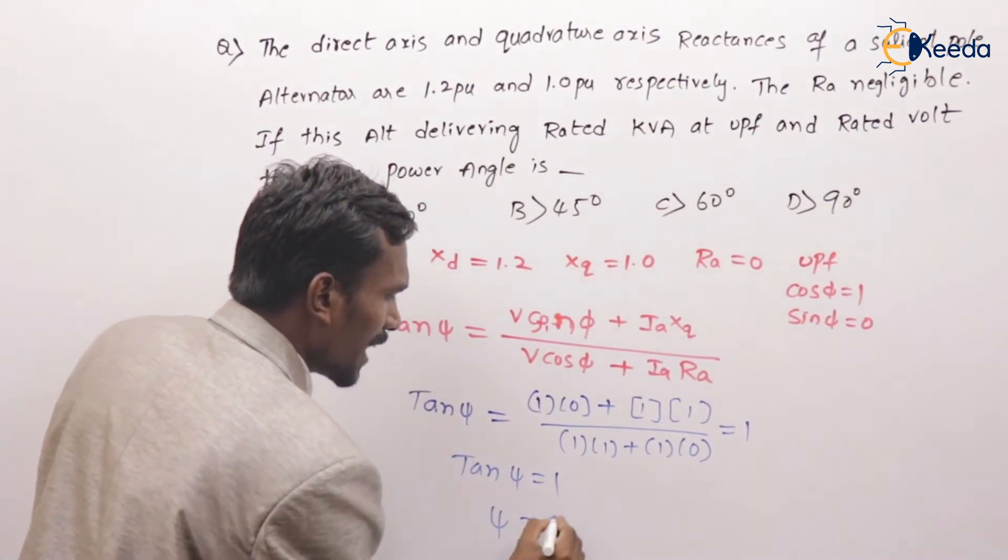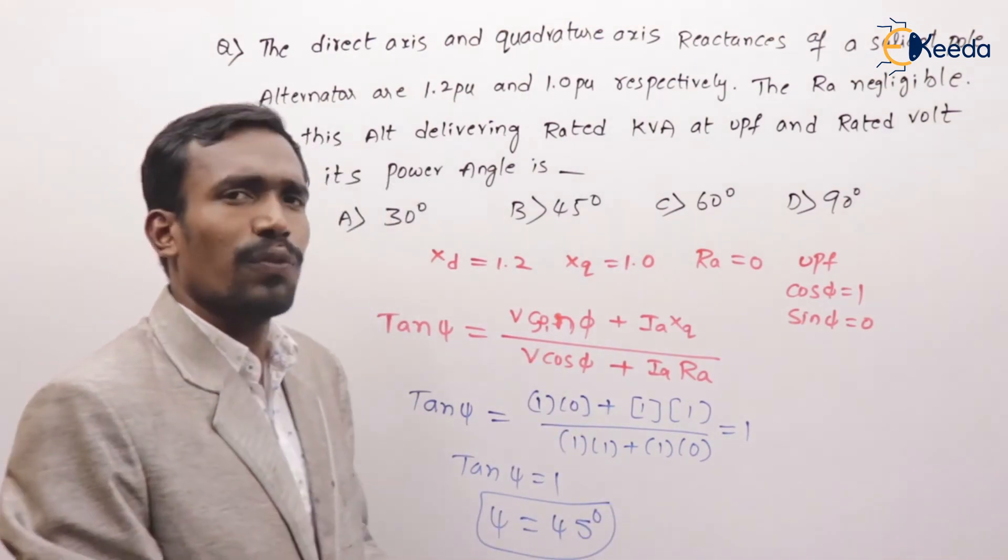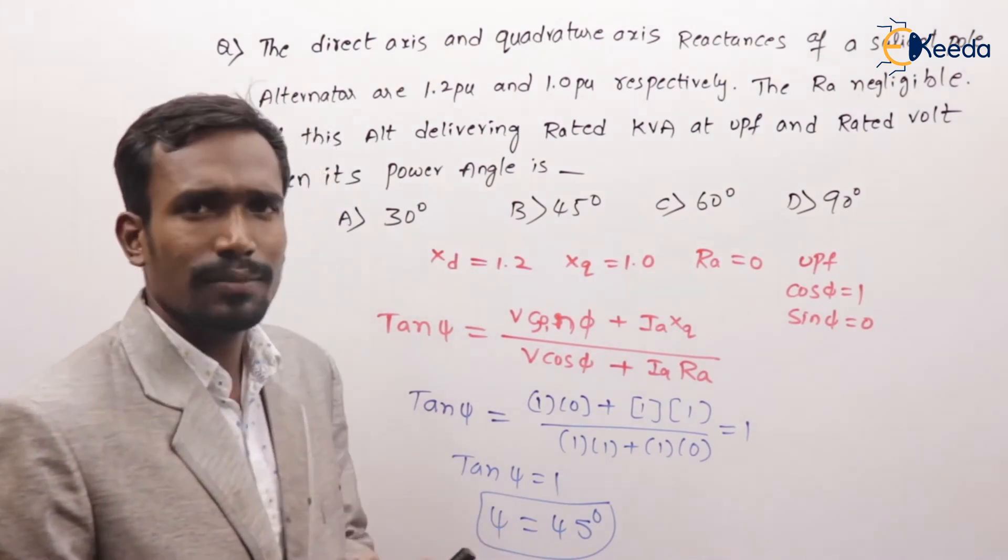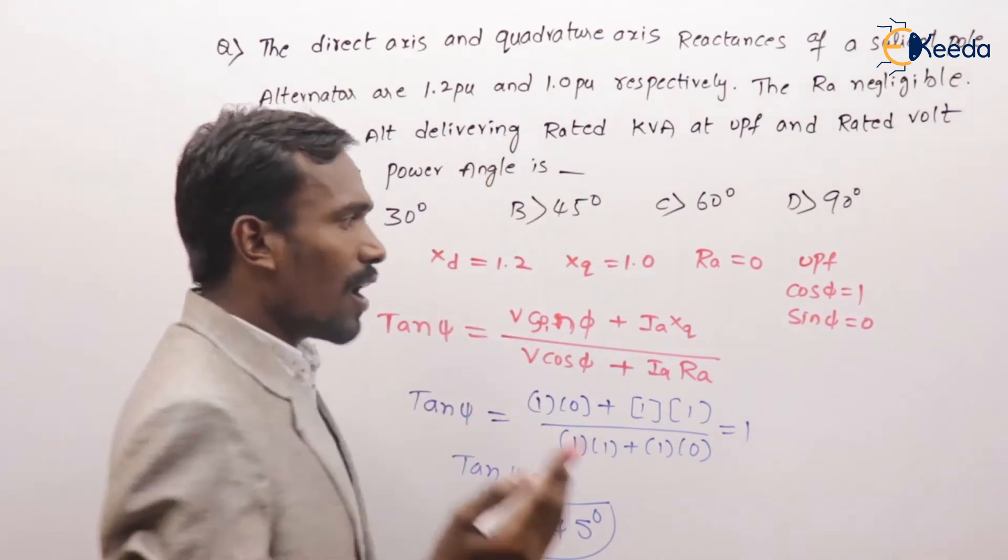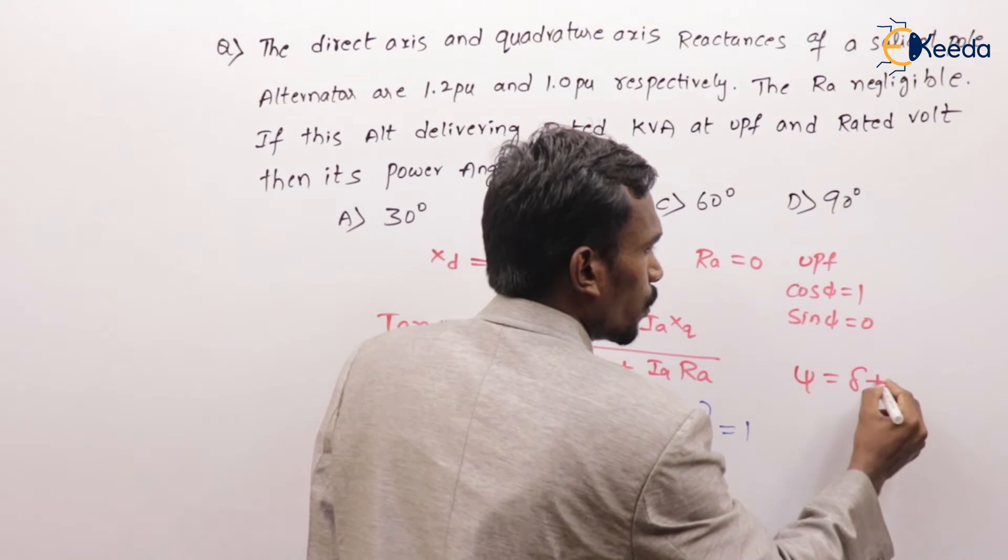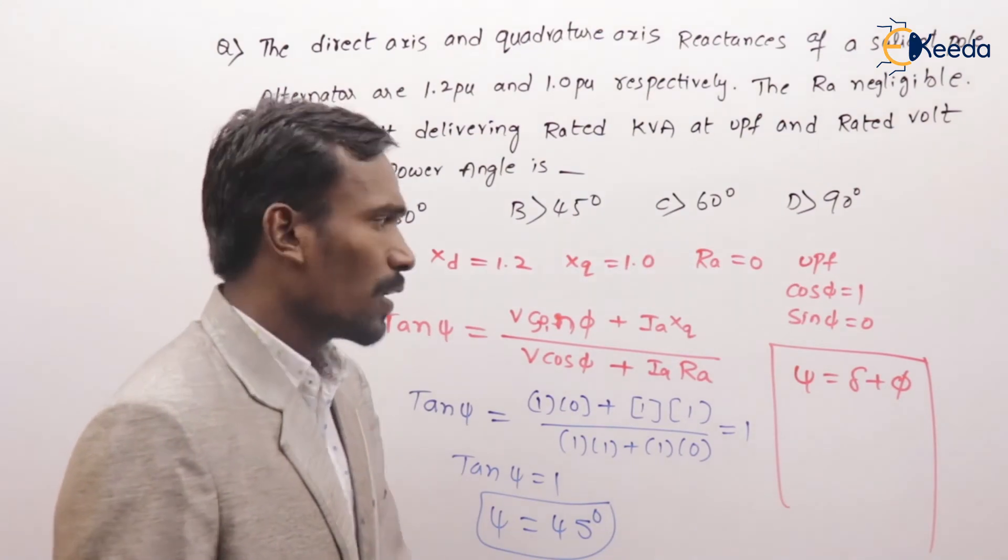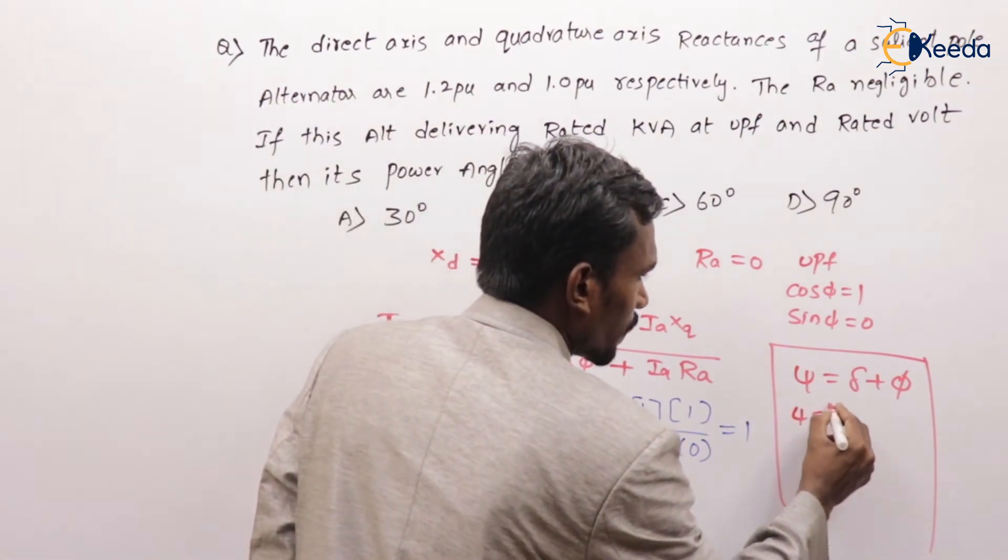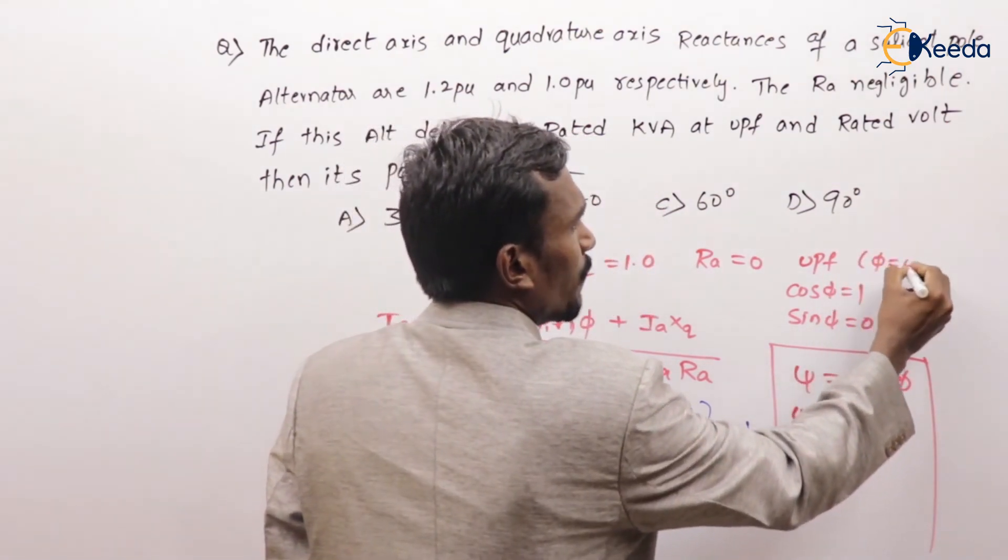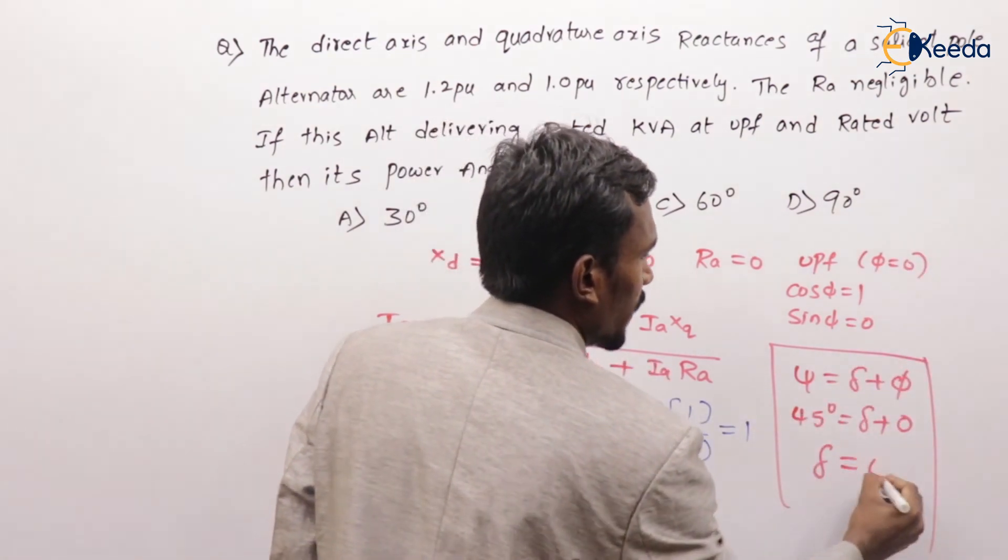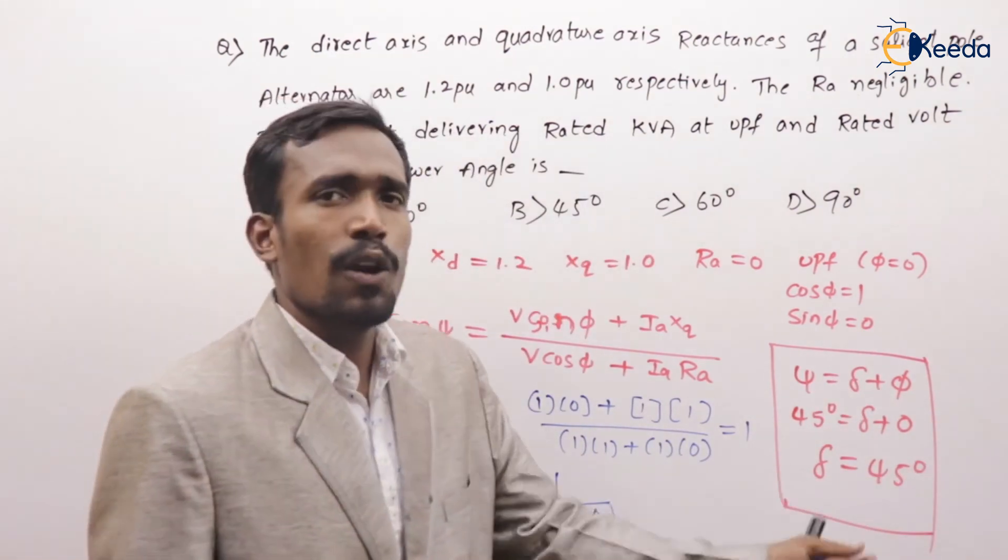ψ is equal to 45 degrees. But actually for an alternator, ψ is equal to delta plus φ. What is ψ? 45 degrees. Delta we have to find. What is the power factor angle? At unity power factor, φ is equal to 0. So delta is equal to ψ, delta is equal to 45 degrees.